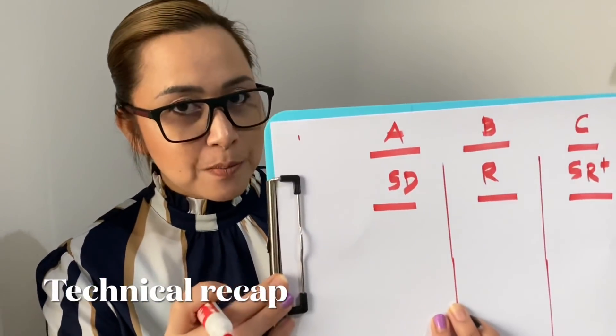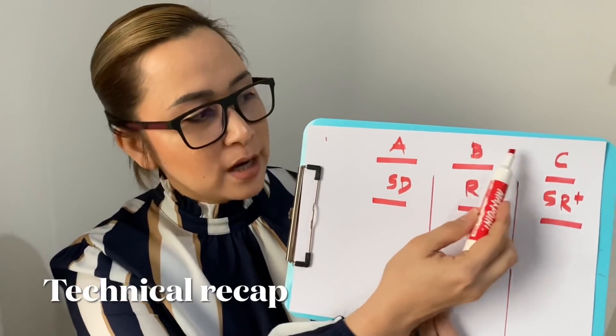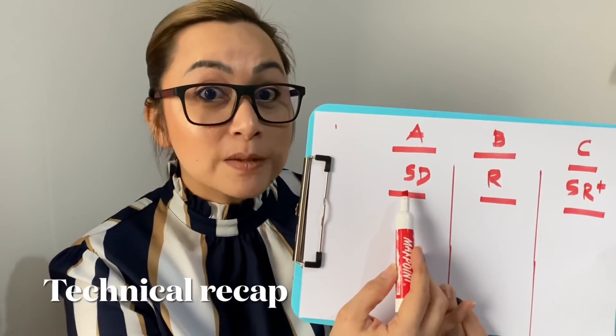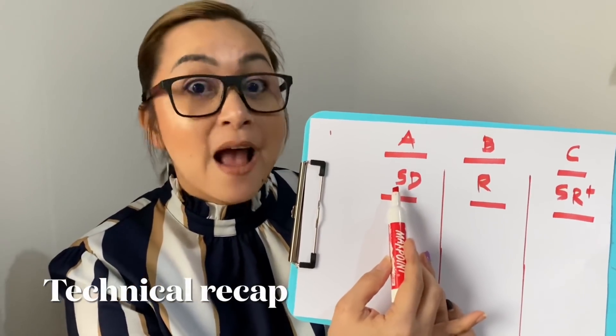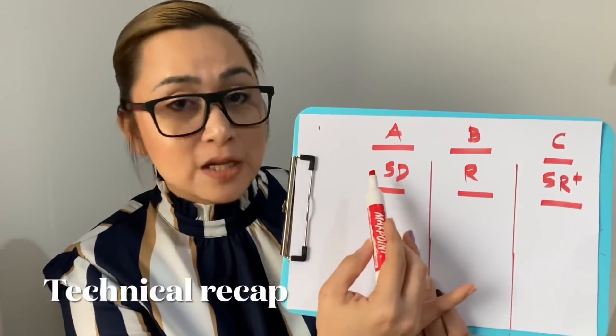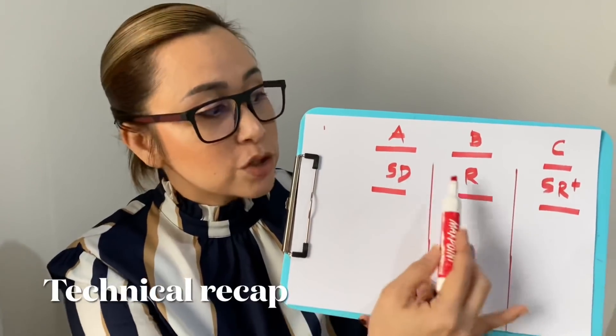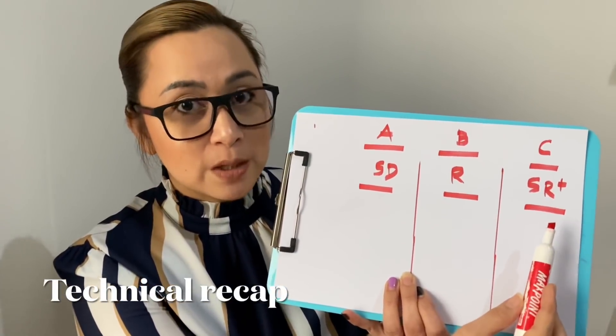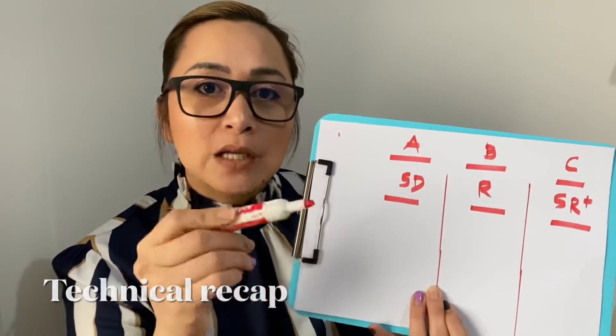Alright, let me show you how it looks in the technical part. Don't forget to review the links below so that it will help you with previous ideas, technicalities, and concepts taught in this channel. The A is for antecedent, B is for the behavior, and C for the consequence. SD is for the situation before the response happened, or the SD signals the availability of the reinforcer. These are the instructions, or the things that you want your child to do so that he or she can receive the reinforcer.